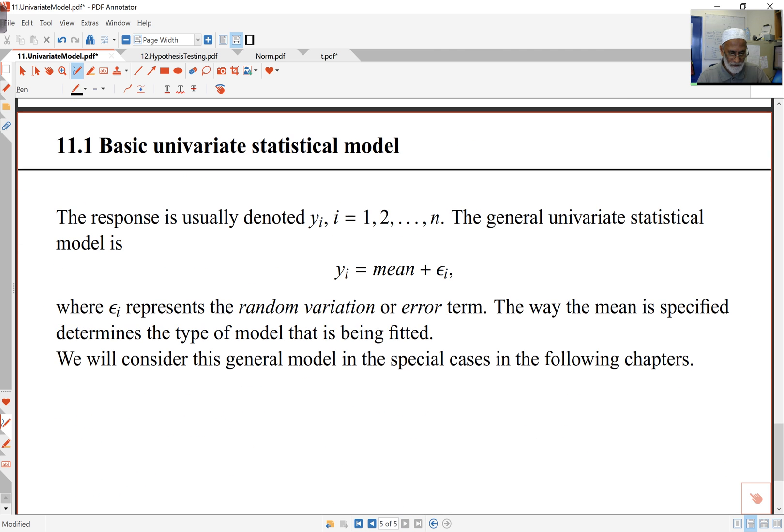So we have responses yi, i equals 1 to n, the n observations here. And what we're going to model this as essentially is that for each observation yi, there is some mean plus some error term or random variation term. So this epsilon i represents some random variation around some mean.